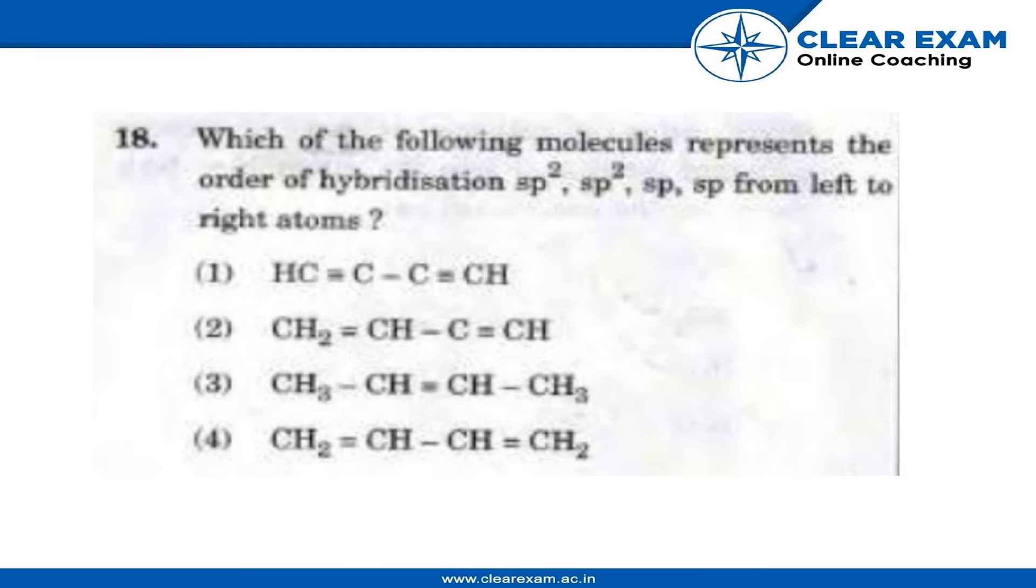To represent the order of hybridization sp², sp², sp, sp from left to right atoms, the carbon should be a carbon atom attached to the double bond, which is sp² hybridized, and carbon atom attached to triple bond, which is sp hybridized.